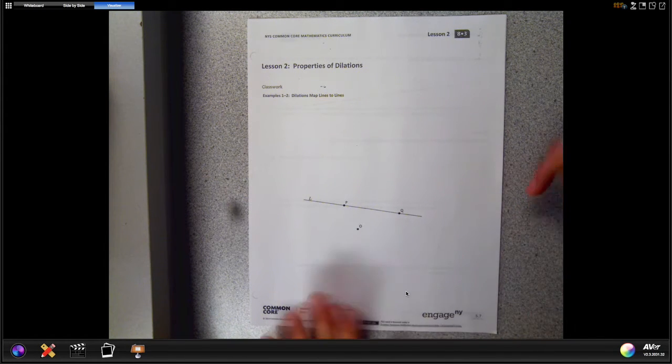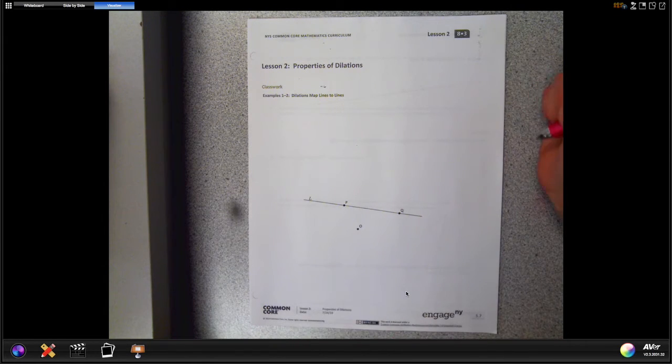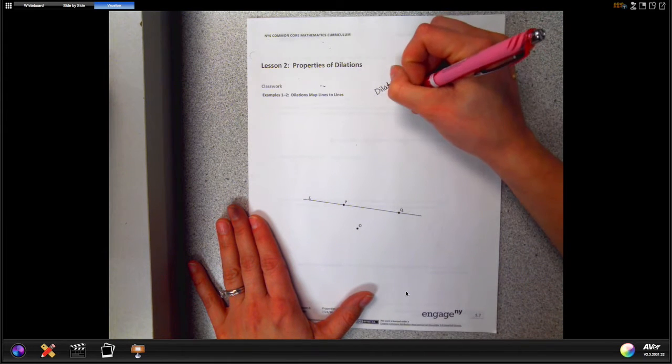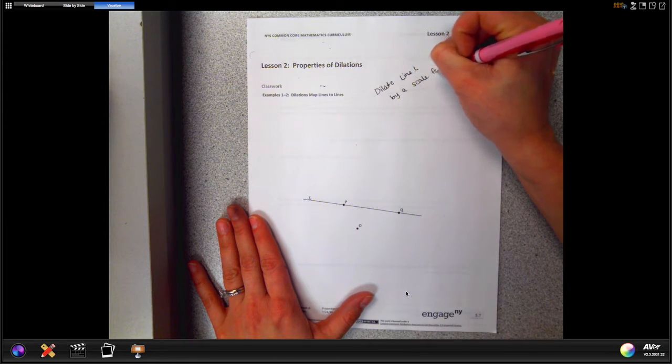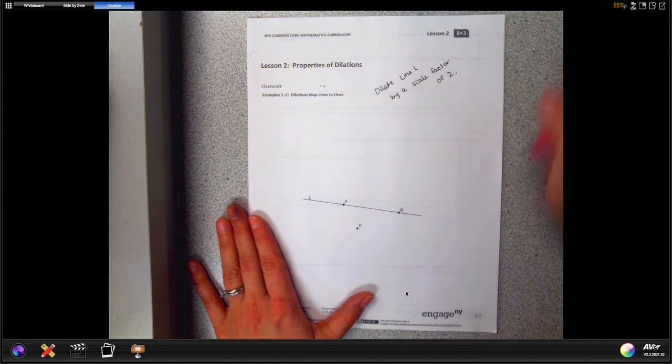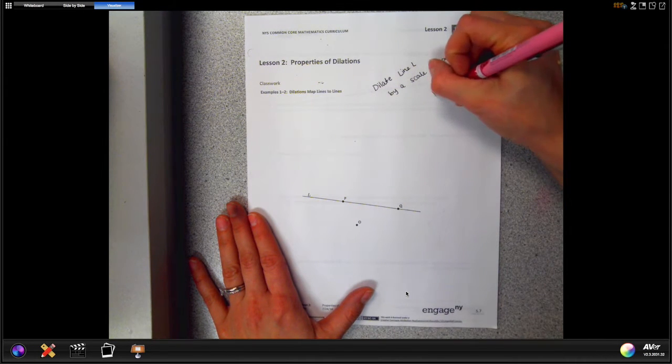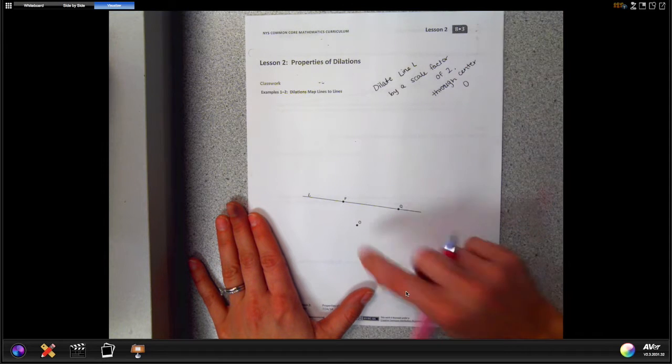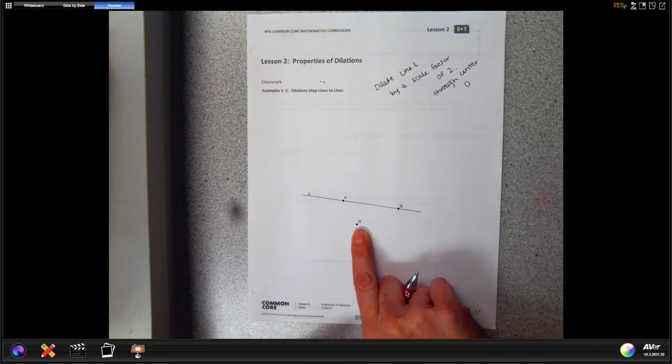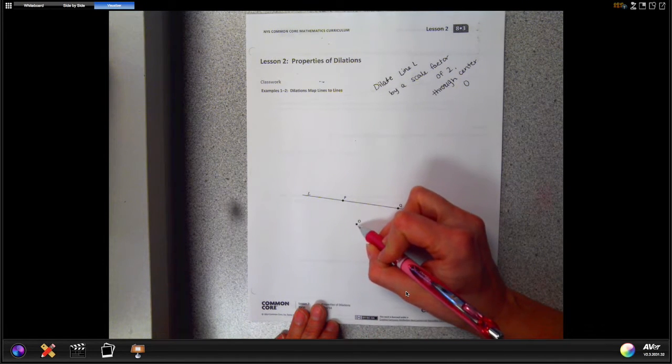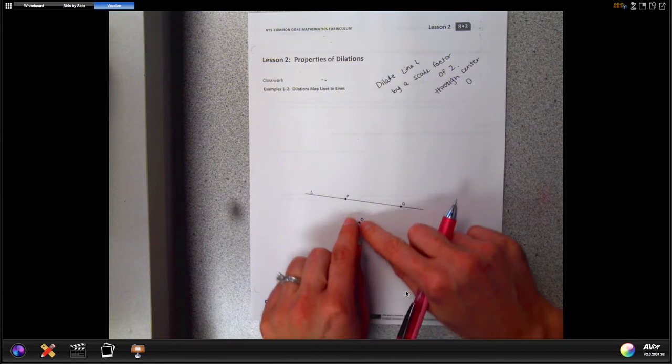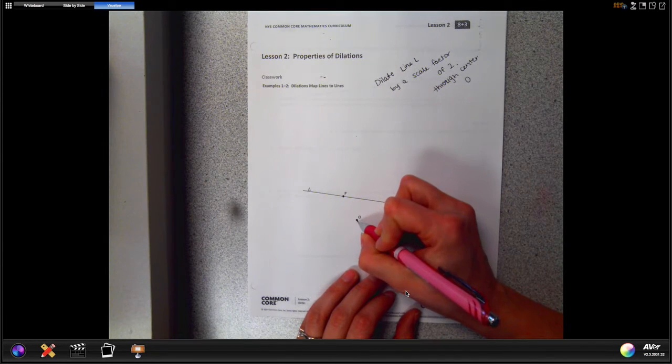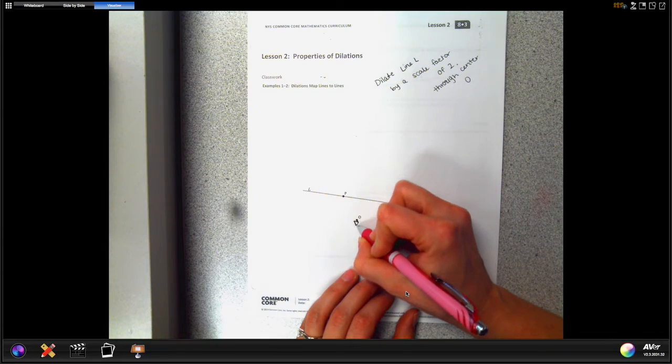So the first main point is that dilations map lines to lines. What we want to do here is we are going to dilate line L by a scale factor of two through center O. So here's line L and here's our center point. Now what that means through center O is that it's like we have a little flashlight here and it's gonna flash out and dilate the line outward like the Batman symbol.